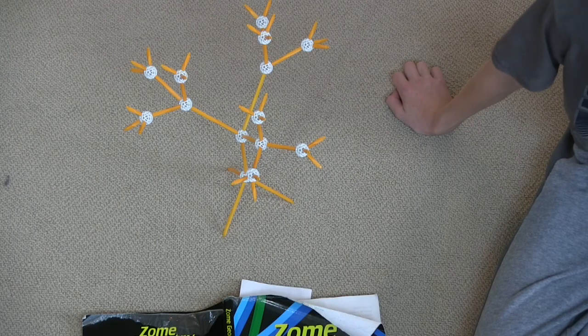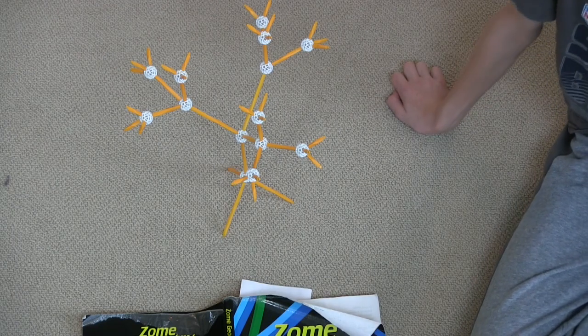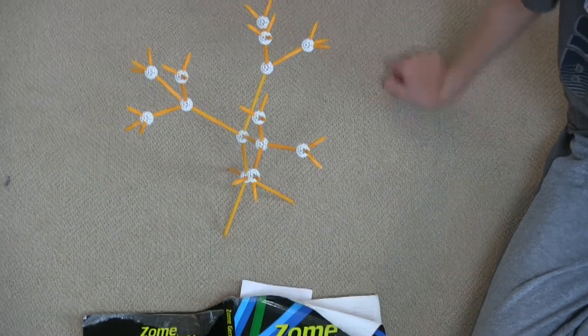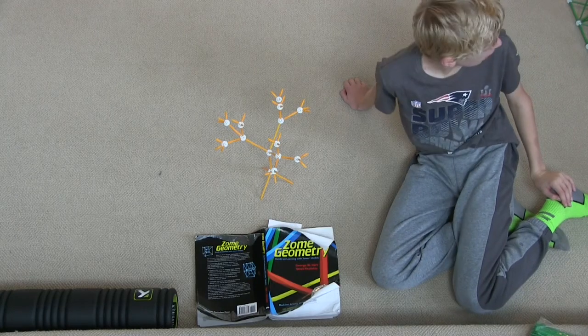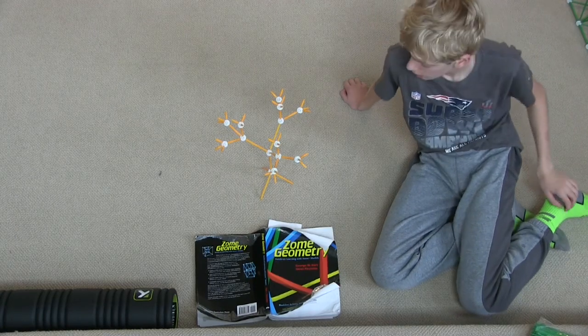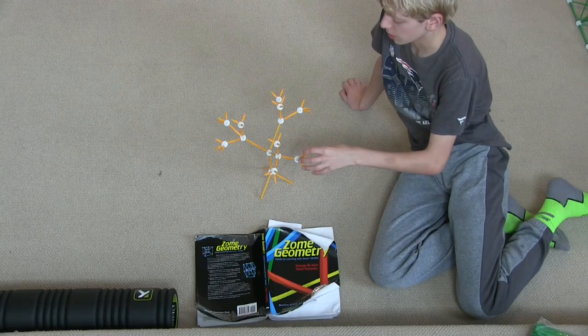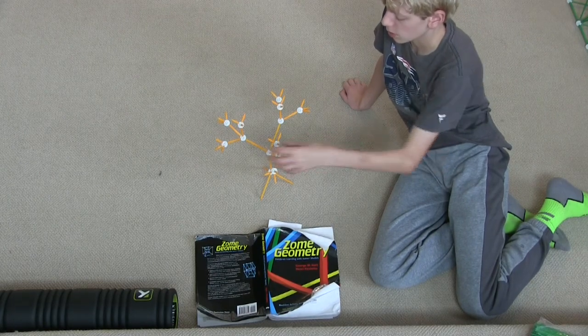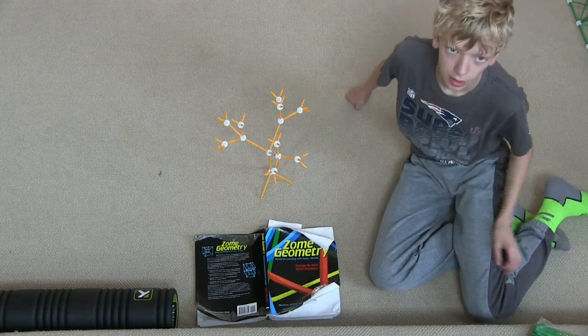Alright, so what are some things that you think are similar about the two shapes? Well they both have three-fold symmetry. They're both built by following a certain pattern. But in this one, they both kind of start from the small ones and then they kind of get larger and larger.